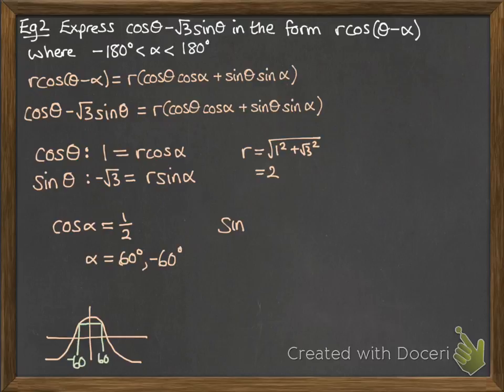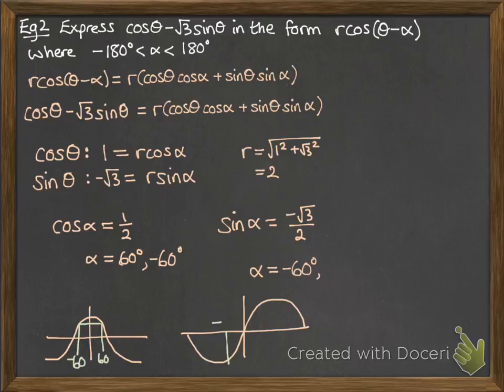And then from sine alpha being equal to minus root 3 over 2, we get alpha is negative 60. And then from the graph again, we find what matches with that. So we've also got minus 120 degrees. OK, so there's all the possible solutions for alpha.